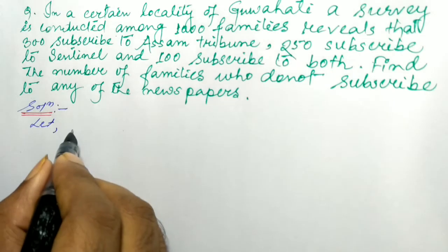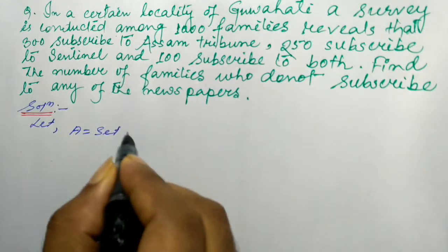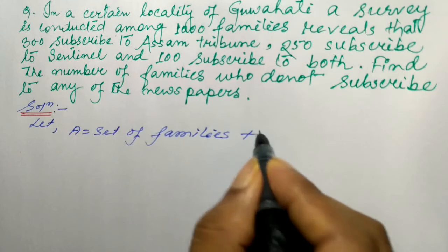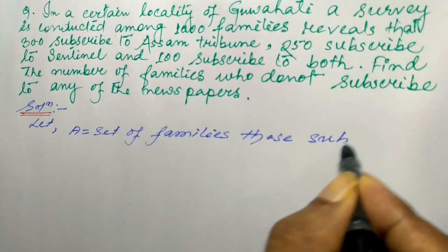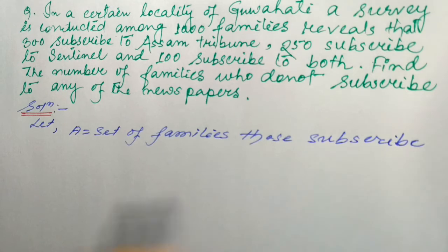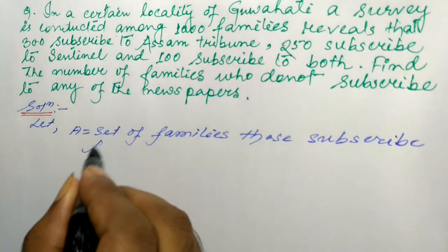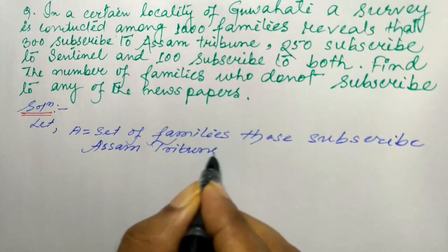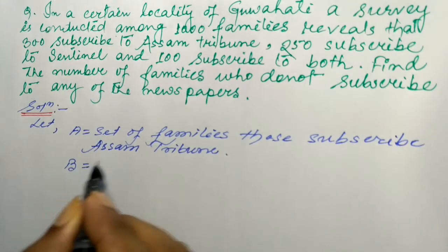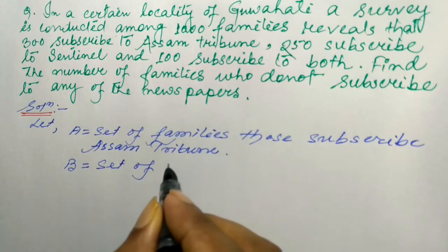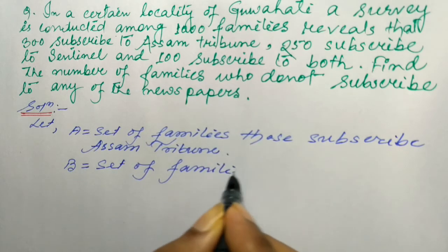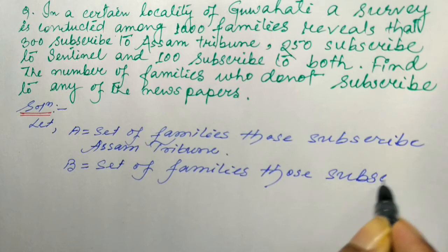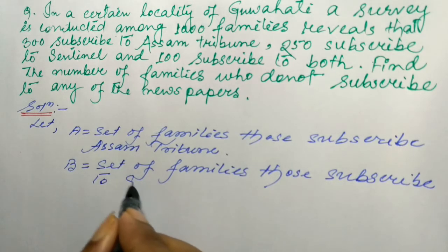For the parameter, let A equal to the set of families who subscribe to Assam Tribune, and B equal to the set of families who subscribe to Sentinel.